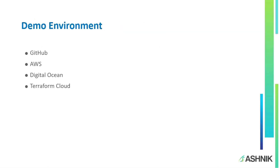In today's demo, I'll be using GitHub to store the Terraform configuration. I'm going to use two cloud platforms — AWS and DigitalOcean — where the infrastructure will be provisioned. Instead of DigitalOcean, you can assume a VMware or private cloud environment on-premise for a hybrid cloud approach. I'll also be using Terraform Cloud to securely and reliably deploy infrastructure.